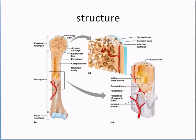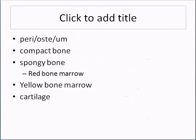Inside the spongy bone you'll find yellow bone marrow and red bone marrow. Yellow bone marrow — think fat storage. Red bone marrow — think blood. That's where you have your blood cells: red blood cells, white blood cells, and platelets.